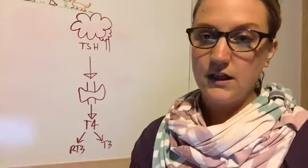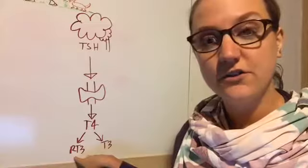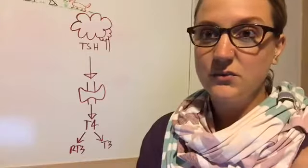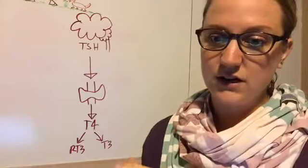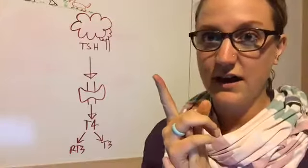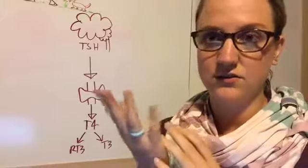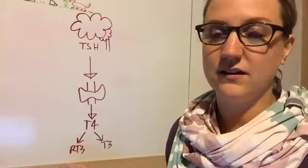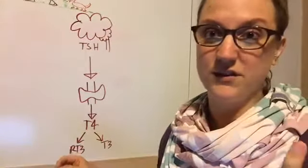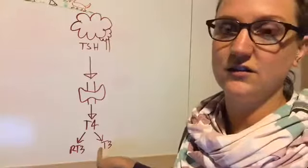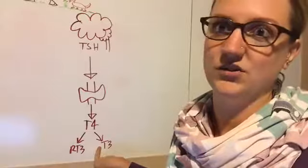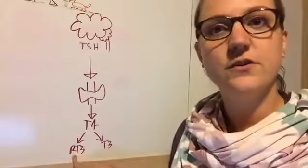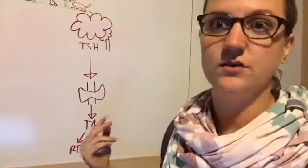We also want to measure reverse T3. So reverse T3 acts like the brakes on our thyroid function, essentially. So when we're really stressed out, things like that, insulin resistance can cause high reverse T3, leptin resistance, stress, like I said. And so when we're producing a lot of reverse T3, it acts like the brakes and it's an inactive hormone essentially. And it goes to the receptor sites instead of the T3. And so our T3 can't get to our tissues and make it, you know, increase our metabolism and do all its good things if we're producing too much reverse T3. So we want to measure that to make sure that we're not producing too much reverse T3.